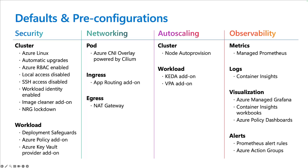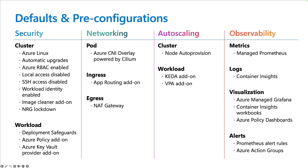Scaling is often a key day-two operations concern. AKS Automatic enables AKS node auto-provisioning, based on the open source Karpenter project, to automatically provision and deprovision nodes based on workload demands. This cluster autoscaler routinely checks for underutilized nodes and bin-packs workloads to maximize efficiency and save money. AKS Automatic also installs KEDA, the Kubernetes Event-Driven Autoscaler, to scale workloads based on events or metrics. Additionally, the Vertical Pod Autoscaler add-on is installed to automatically adjust resource requests based on actual usage.